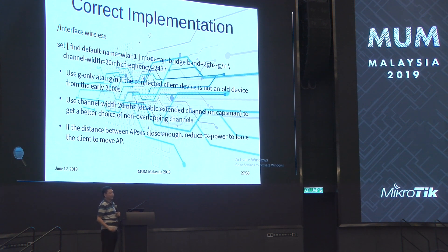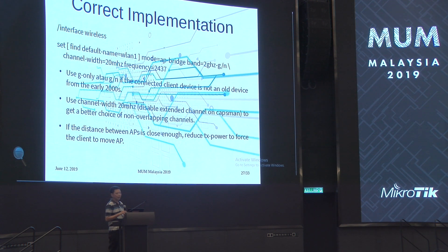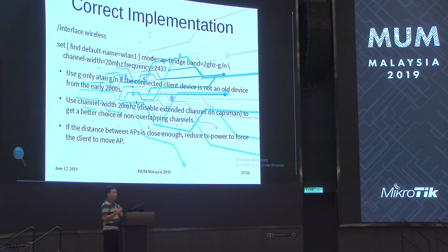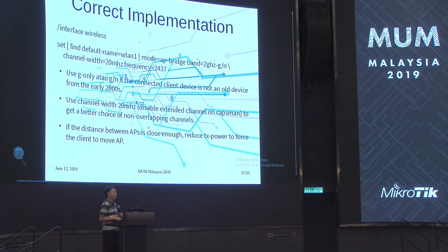Correct implementation: use G only or GN if all connected client devices are not from earlier than 2000. If there is one device from around 2000 that only supports B, then switch to BGN. Use channel width 20 MHz. Disable extended channel on CAPsMAN to get a better choice of non-overlapping channels. If the distance between APs is close enough, reduce the TX power to force the client to move to the nearer AP.